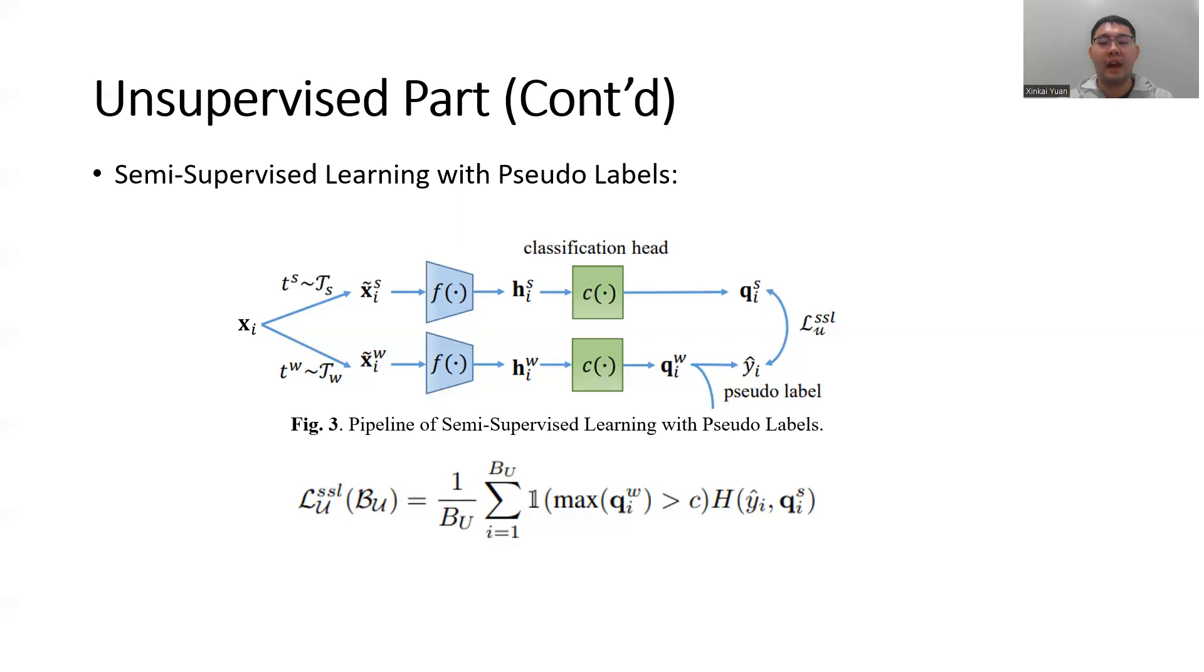Otherwise, we don't think that we have a valid pseudo-label, so we just ignore such sample when computing the loss. In this loss function, this capital 1 is a function returning 1 if the condition inside is true and 0 otherwise. H represents the cross-entropy loss function.